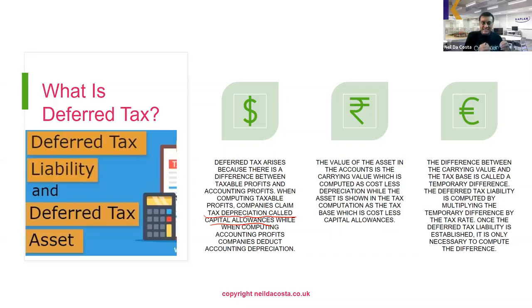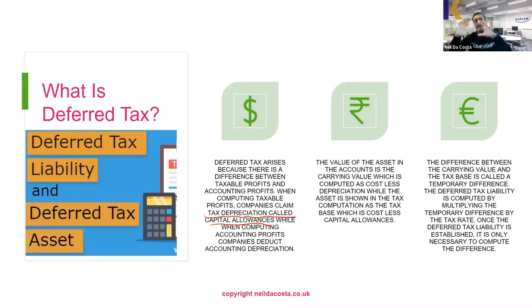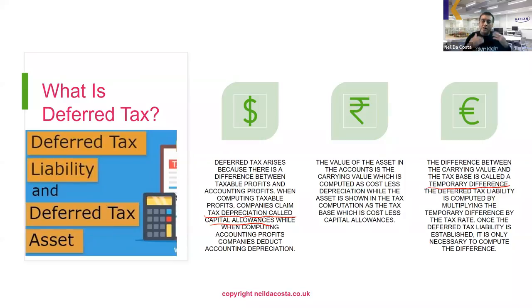The asset in our tax computation is referred to as the tax base — simply cost less capital allowances, which are the tax depreciation the company has claimed. There's a difference between the value of the asset in the financial accounts and the value in the tax computation. The difference between the carrying value and the tax base is called a temporary difference, and the deferred tax liability is computed by multiplying that temporary difference by the tax rate.